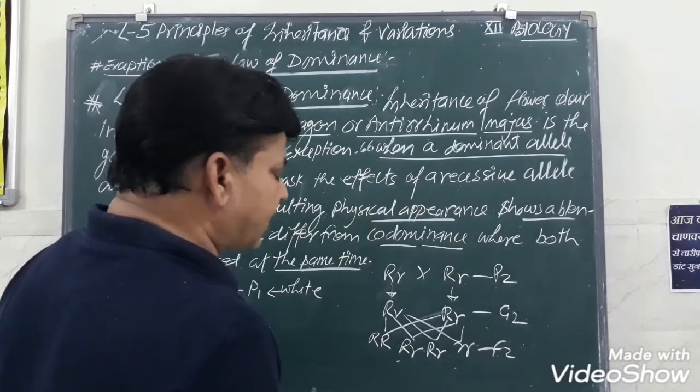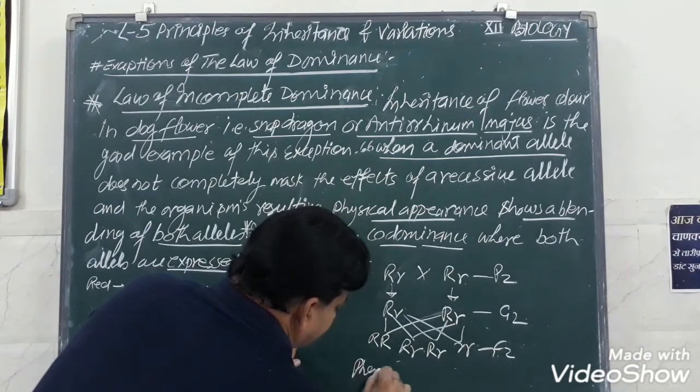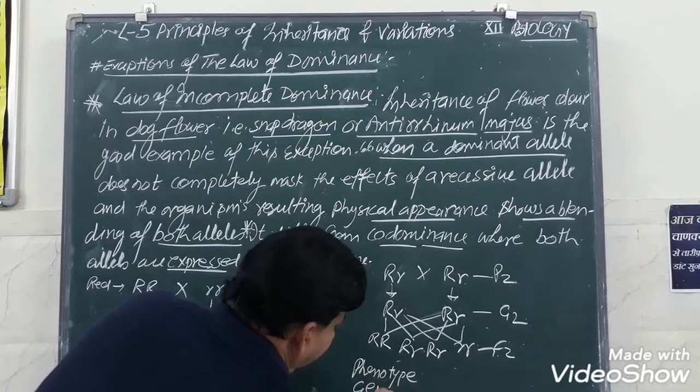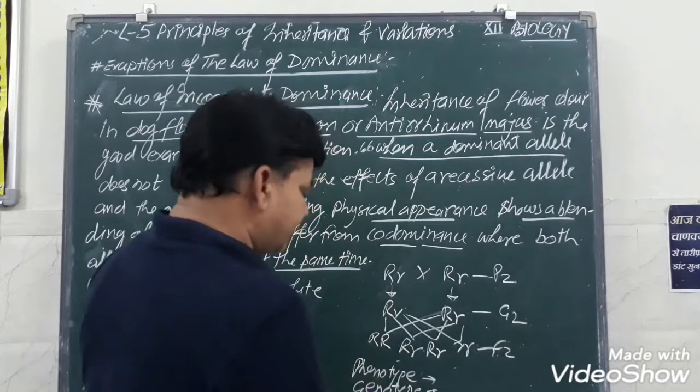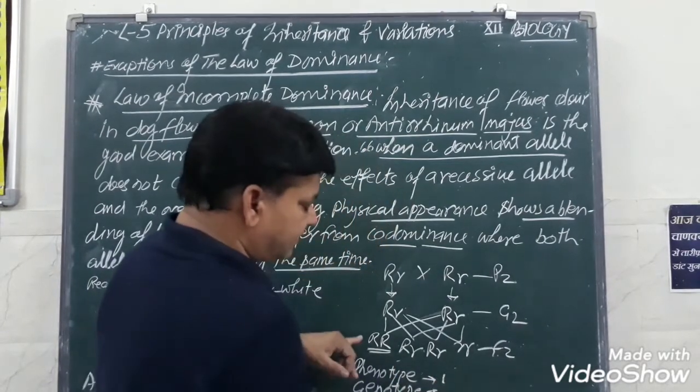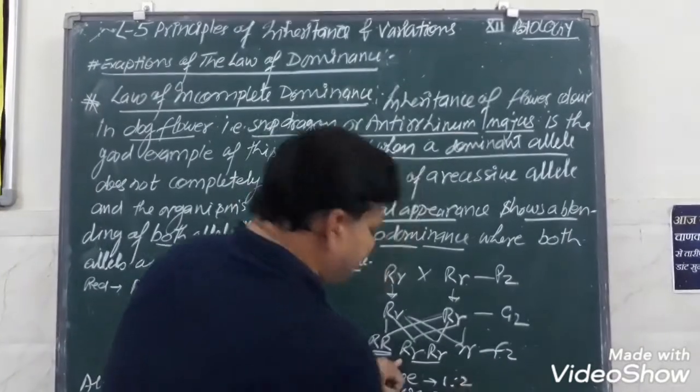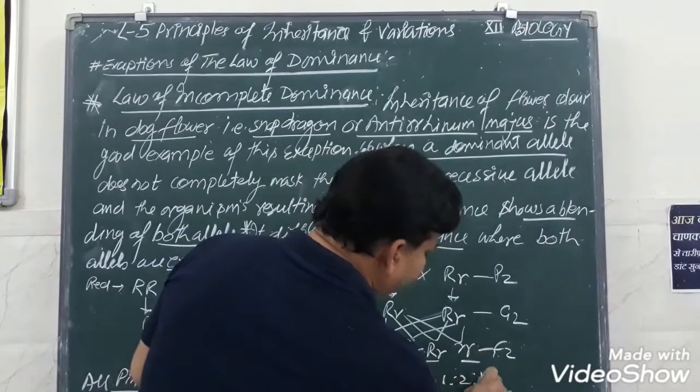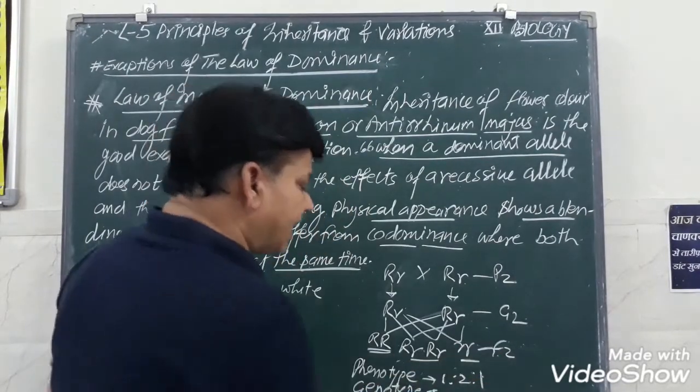So here, we see phenotype. Phenotypic ratio will be phenotype as well as genotype. We can see both here. Phenotype: this is the red, red is one. These two are the pink, pink are two. And one is the white. Phenotype ratio is 1 ratio 2 ratio 1.